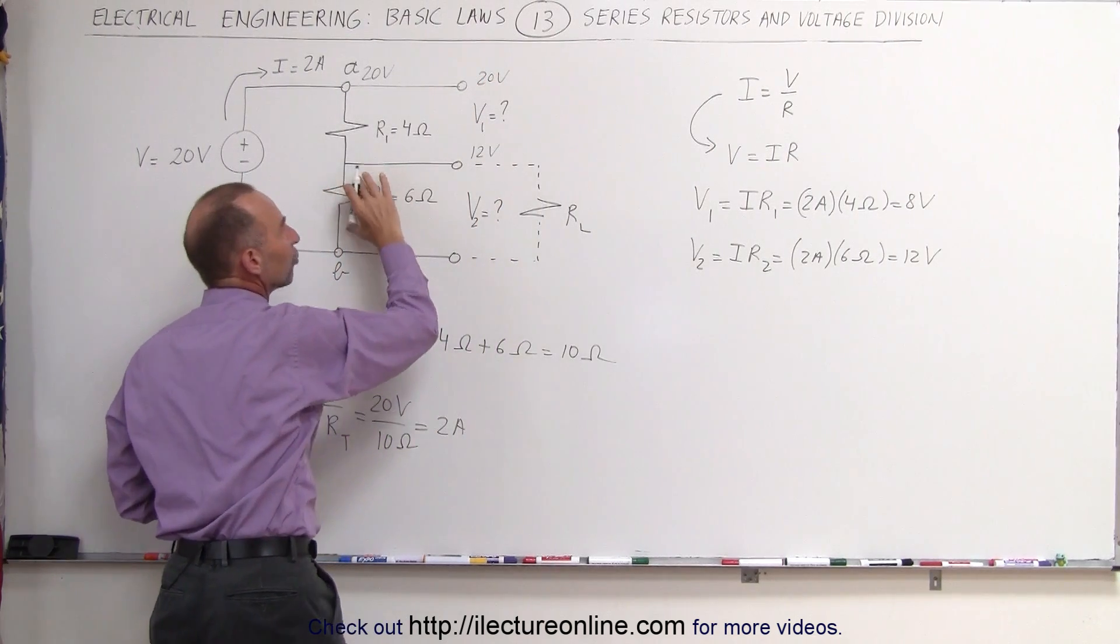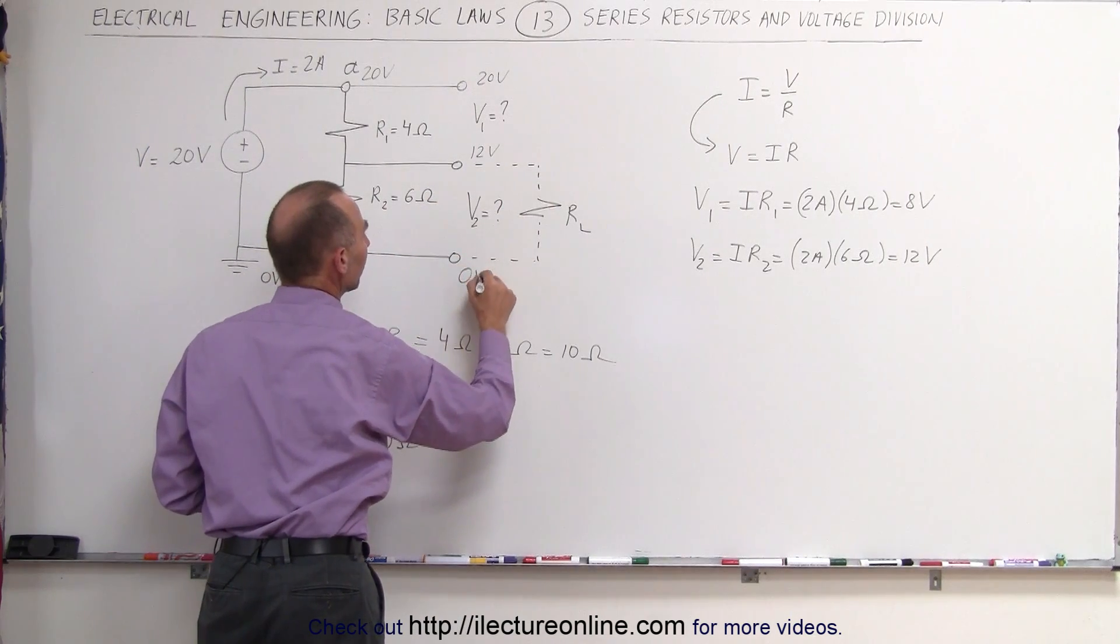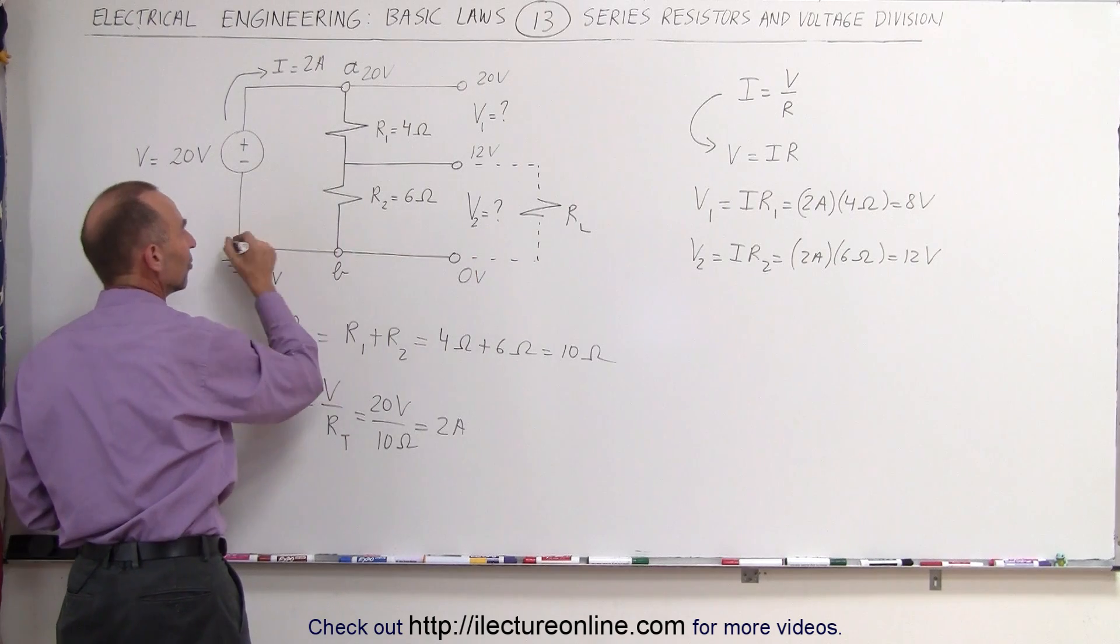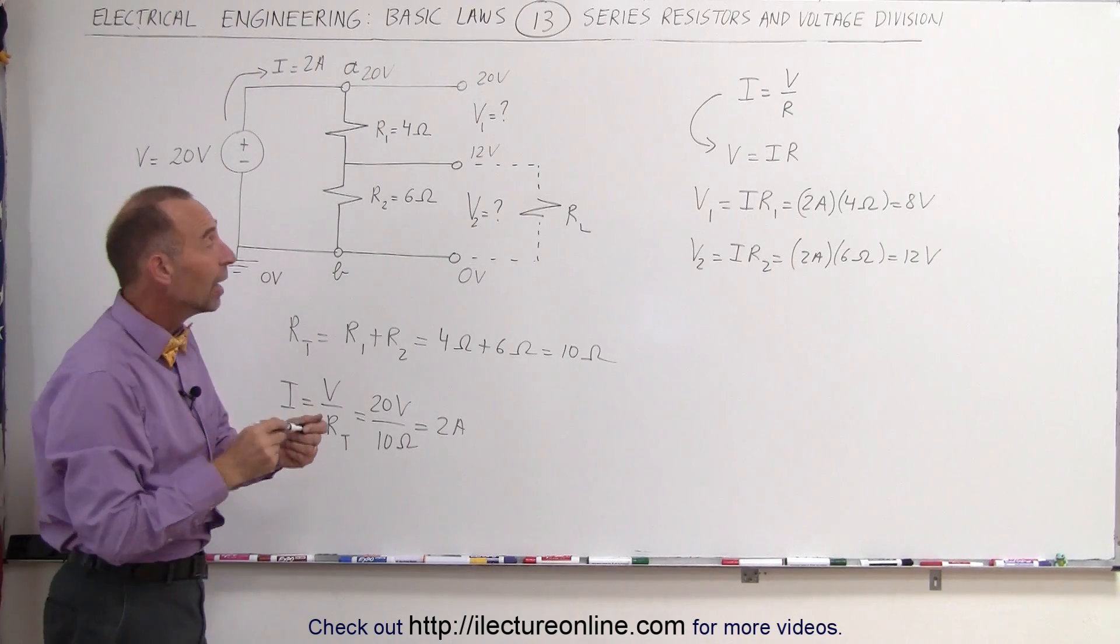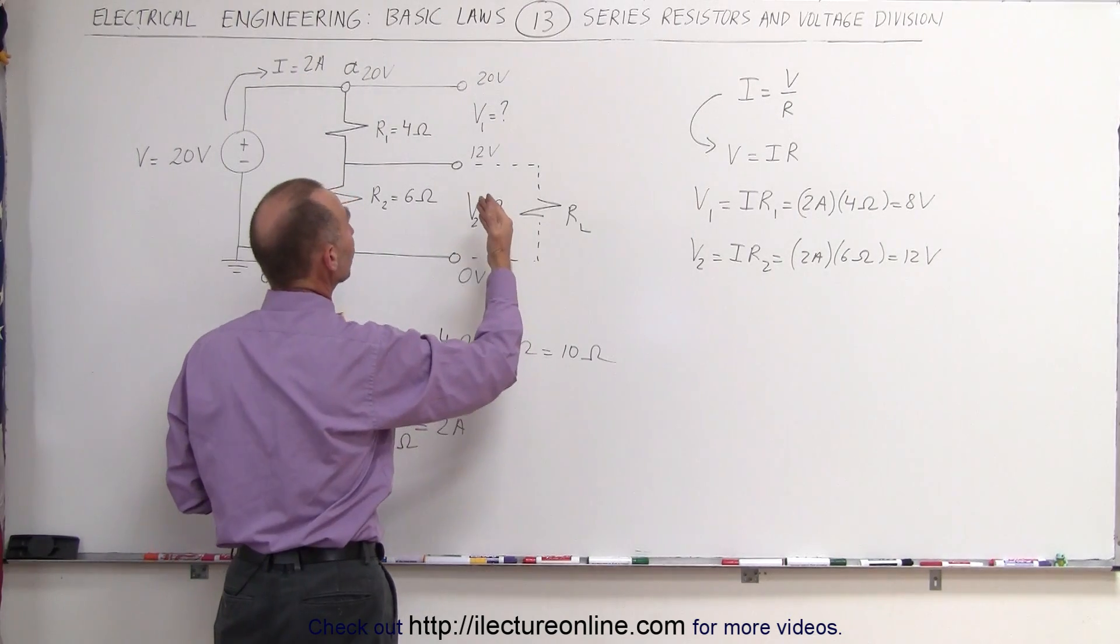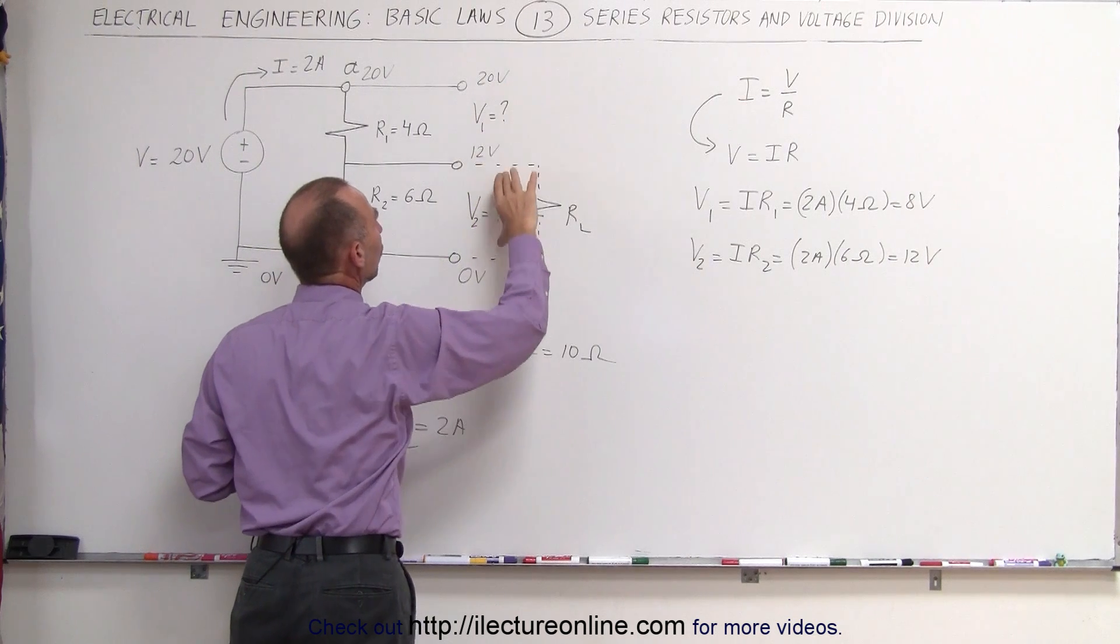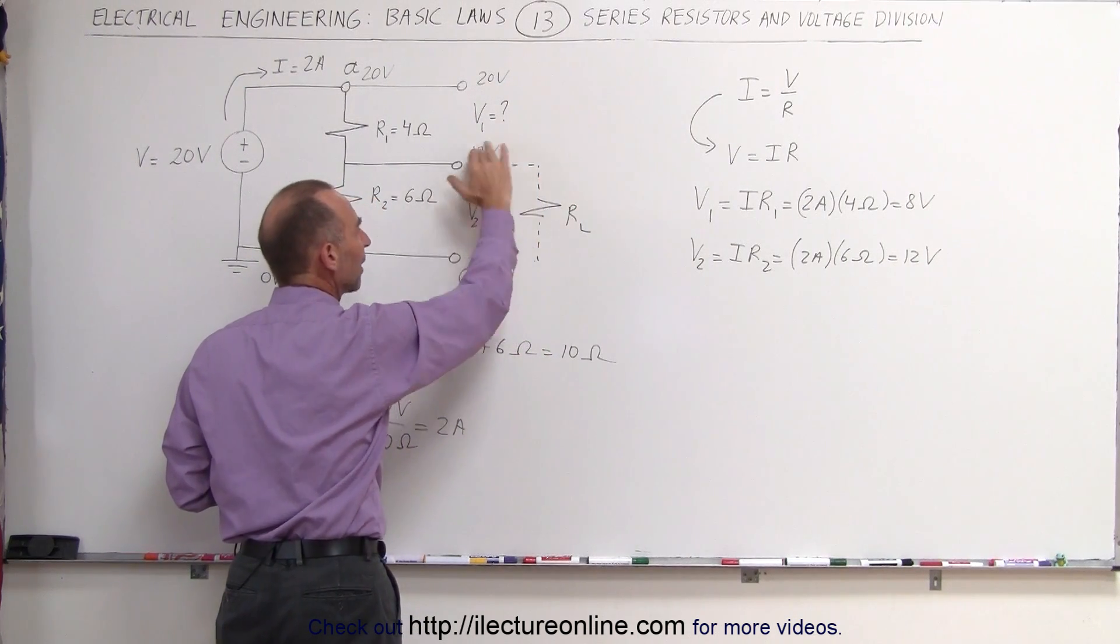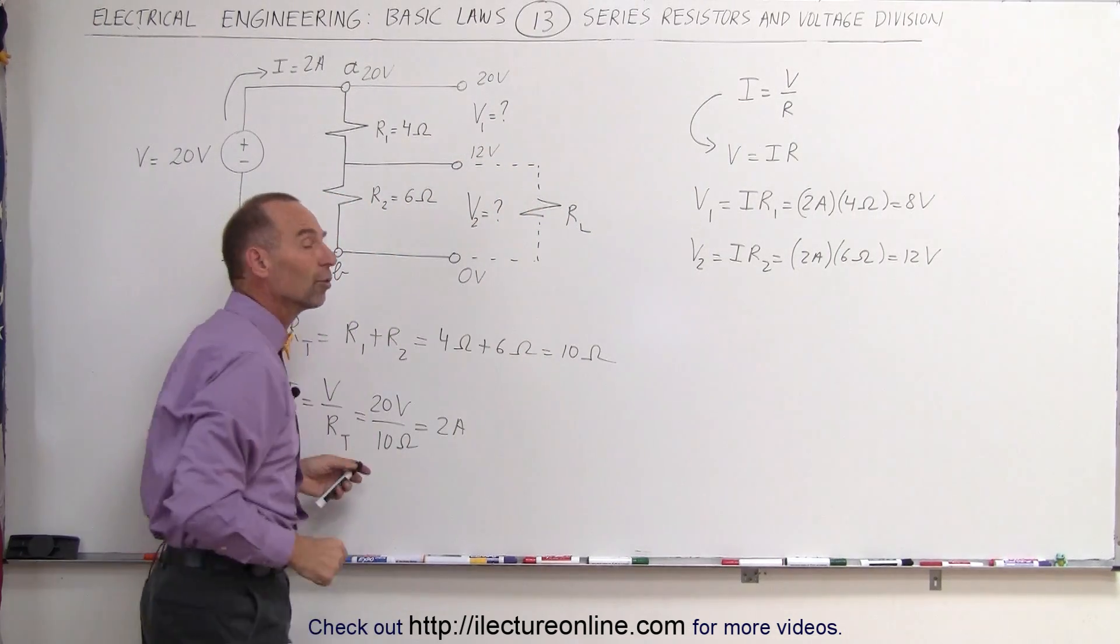And then we have a 12 volt drop across R2 from 12 down to 0 volts. This, of course, should be the same as the voltage over here because this is a single node right here which is attached to ground. What that means now is that we have a voltage divider where we took 20 volts and divided it into 8 volts and 12 volts. And if we want the load resistor to be connected to 12 volts, we have the right voltage divider, and this then provides 12 volts for the load resistor.